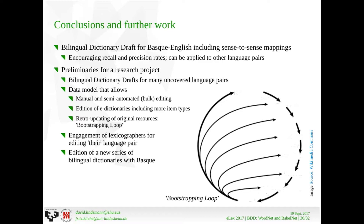Some main conclusions: we have built a bilingual dictionary draft for Basque-English with sense-to-sense mappings, with encouraging recall and precision rates, and all this can be applied to other language pairs. By this we have set the preliminaries for a broader research project, which would include developing a data model that allows manual and semi-automated editing, the inclusion of more item types, and the reuse of manually edited data for an upgrade of the original resources — creating this bootstrapping loop. We would like to have experts on a particular language pair editing the data for that pair, ultimately adding new bilingual dictionaries with Basque that at the moment don't exist.